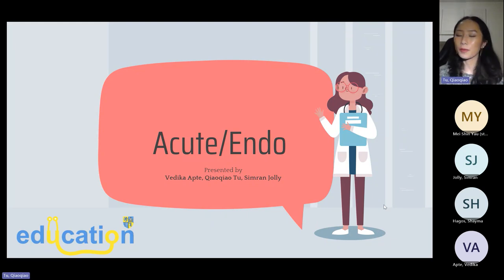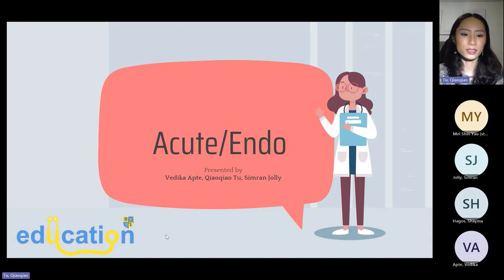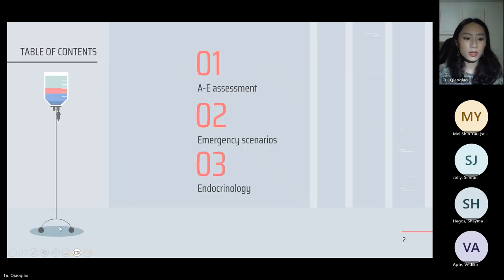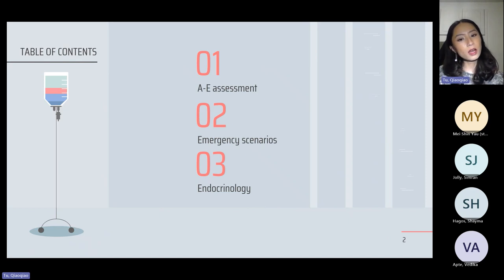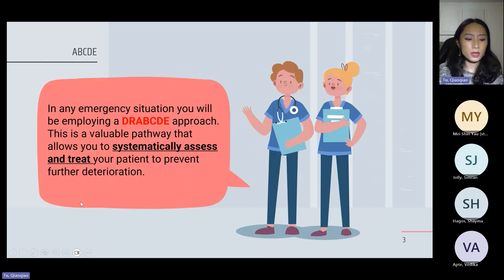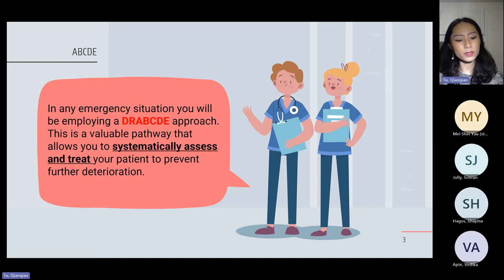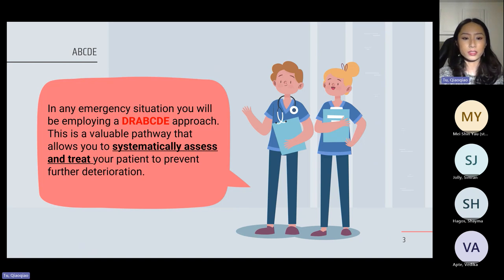My name is Chow Chow and I'm going to start our tutorial on acute and endo-rotation. First I'll go through the A-to-E assessment, then some emergency scenarios, and then we'll talk about some endo conditions as well. In emergency situations we use the Dr ABCDE approach, which allows us to systematically assess and treat our patients to prevent further deterioration.